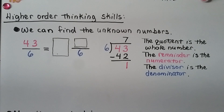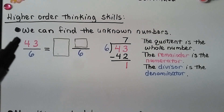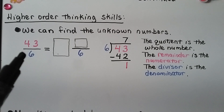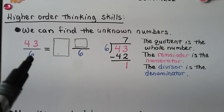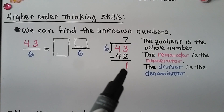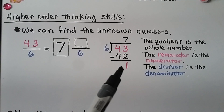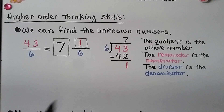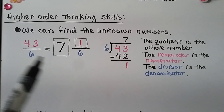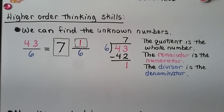Let's try some higher-order thinking. We need to find the unknown whole number and numerator given forty-three sixths. We think forty-three divided by six: six times seven is forty-two, remainder one. Our whole number is the quotient seven, our missing numerator is the remainder one, and we keep the same denominator six — giving us seven and one sixth. Thinking of a fraction greater than one as a little division problem lets us change it into a mixed number quickly.